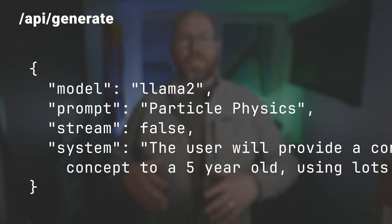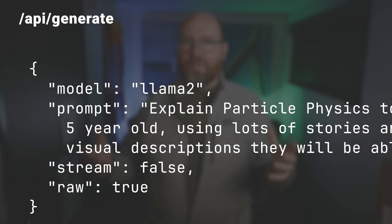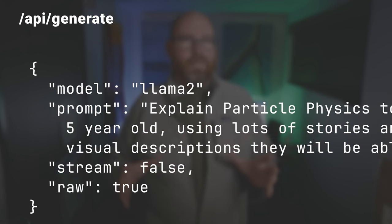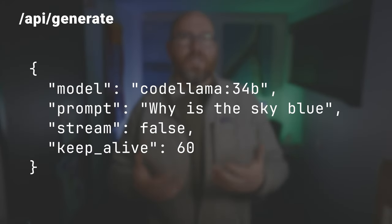Options, system, and template just override whatever's set in the model file. Raw is there in case you want to handle the entire system prompt and template yourself entirely — there were some early users of the API who had a system that managed their own system prompts that needed this. Raw also removes the context from the output. Finally, there's keep_alive. Keep_alive defines how long the model should stay in memory. The default is five minutes, but you can set it to any time you like, or minus one to keep it in memory forever. If you provide just a number, it defaults to seconds, but if you provide it as a string, it must include an S, M, or H to indicate the granularity.